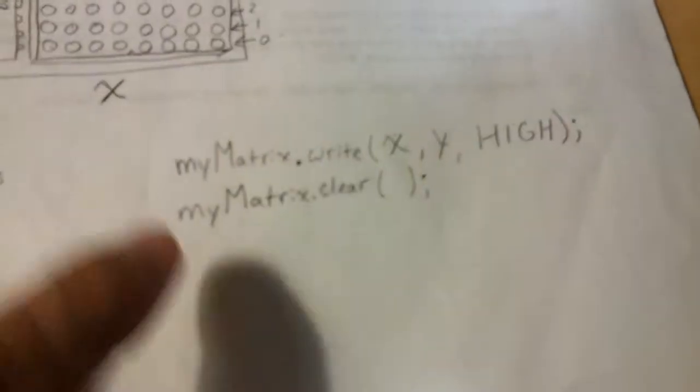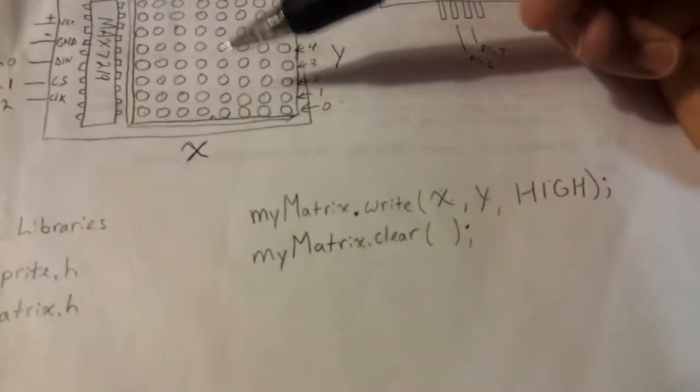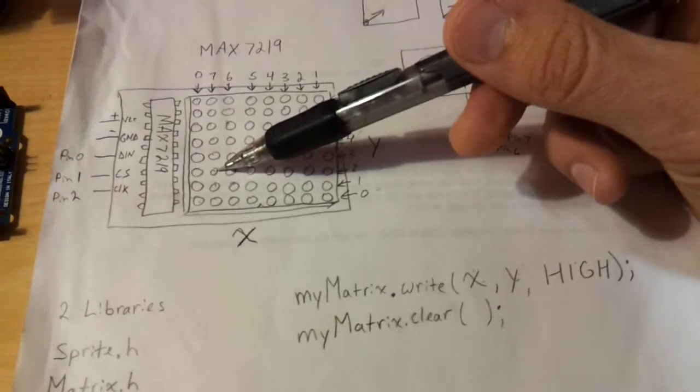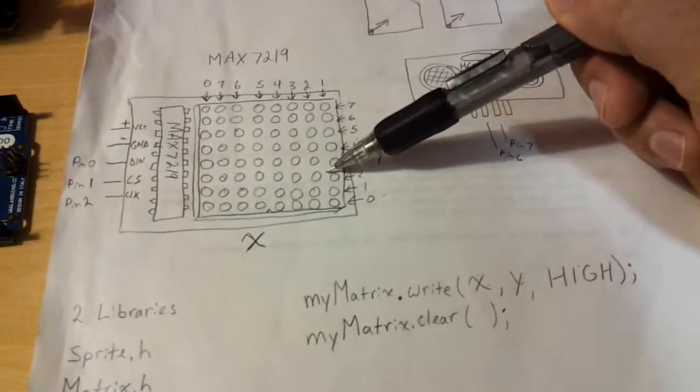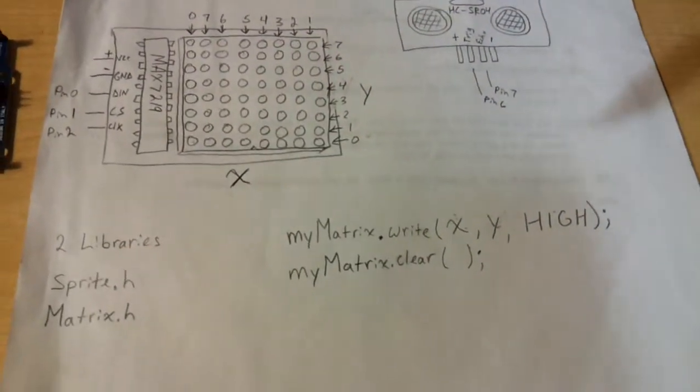If you want to light this one up, you'd write myMatrix. If it's this LED, it's column seven, row two, so you write seven here, comma two, comma, and instead of the LED you want it either be high or low, so you'd write HIGH.